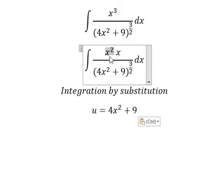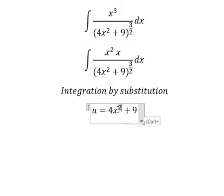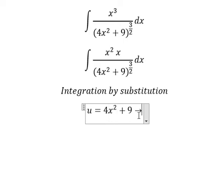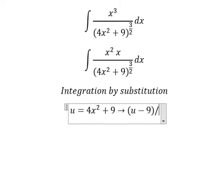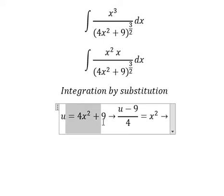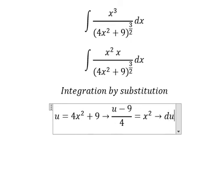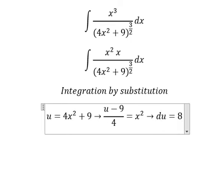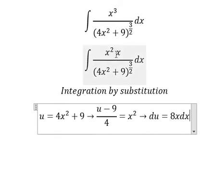Because we still have s squared in here, we need to find s squared in terms of u. So we put the 9 to the left, then we divide both sides by 4. Next we take the square root for both sides, so we have du equals to 8s ds. Because we don't have 8 in here, we divide both sides by 8.